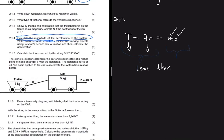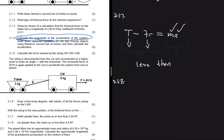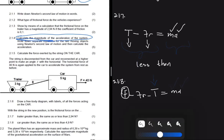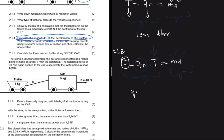Question 2.1.8 asks what happens to the frictional force on the car. In the car's equation: F_applied − friction − T = ma. The applied force is the same, mass and acceleration are the same, but tension has decreased. To maintain the equality, the frictional force must increase — it is greater than before, compensating for the reduced tension.